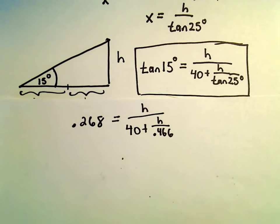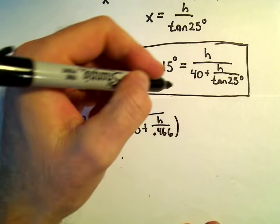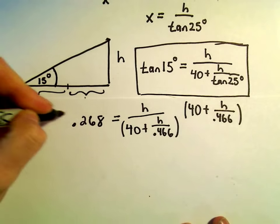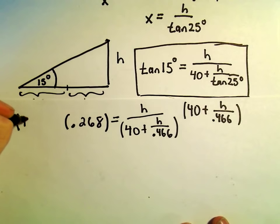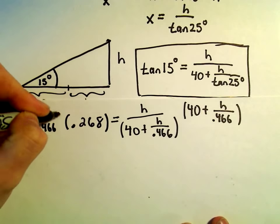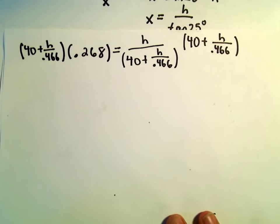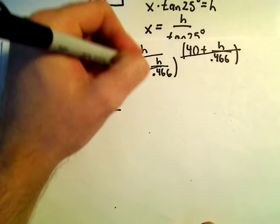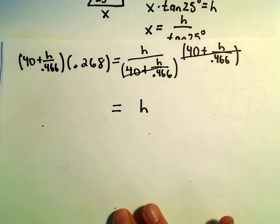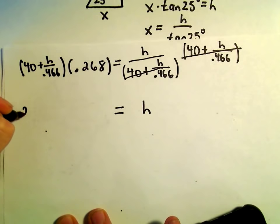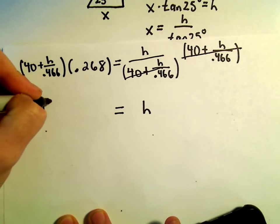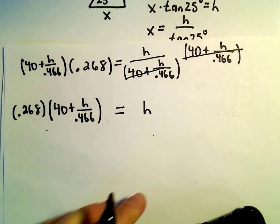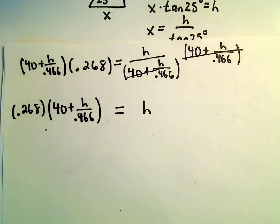What I'm going to do next is I think I'm just going to multiply both sides here by the 40 plus h over 0.466. So we'll have to do it to both sides here. Okay, so on the right side, everything is just going to cancel out. The 40 plus h over 0.466. And we'll be left with 1h. On the right side, I'm going to distribute this out because you can think about the 0.268 as being out front. And then we have 40 plus h over 0.466. So let's do a little distributing here.